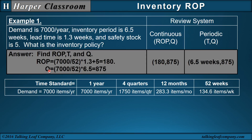The lot size is demand times inventory period. Since the inventory period is in weeks, we convert demand from years to weeks by dividing by 52. The inventory policy for the continuous review system is 180, 875. For the periodic review system, it is T = 6.5 weeks with lot size 875.